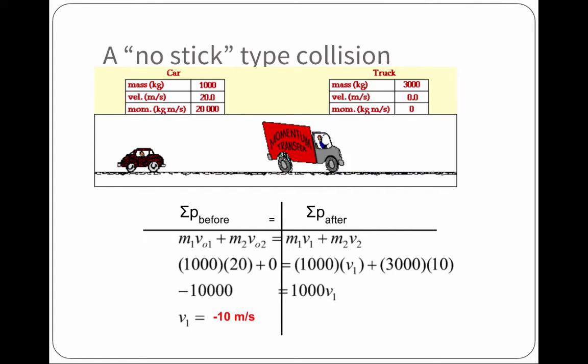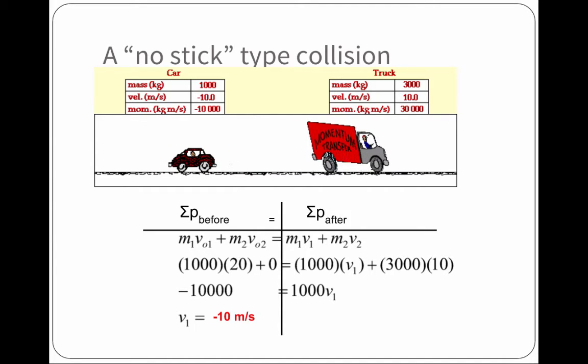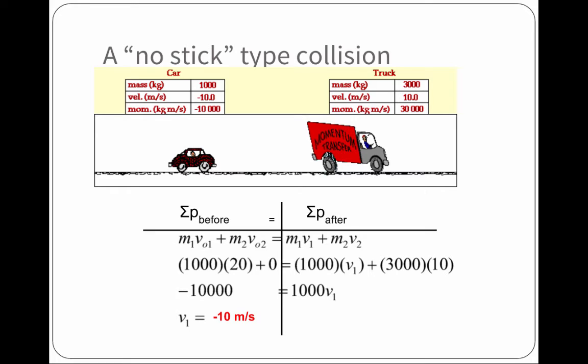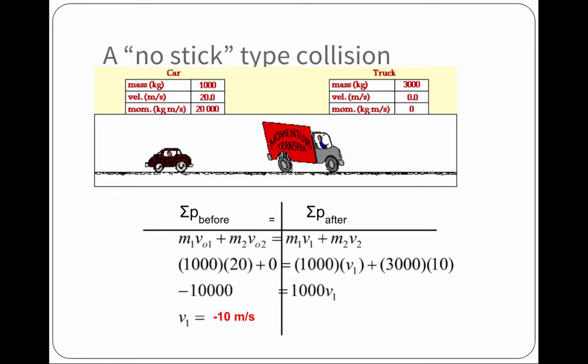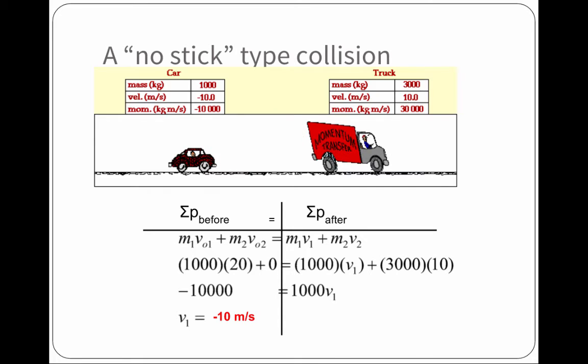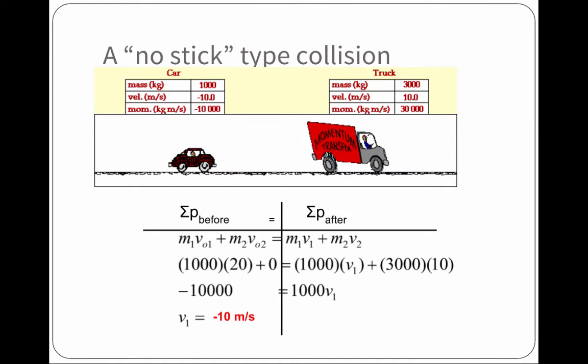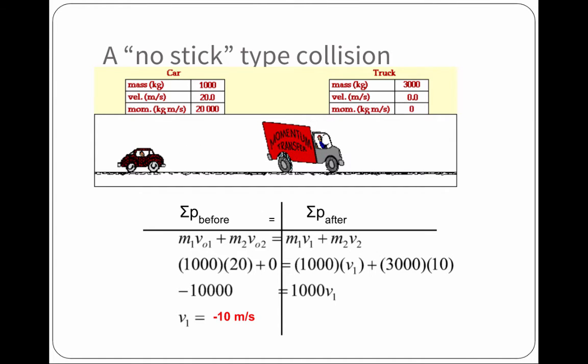...is equal to the mass times the velocity of the car, again, which is a thousand times the velocity of the truck, which is a thousand times the value we don't know, plus the mass of the truck times the velocity of the truck after the collision, three thousand times ten. Do the algebra there, do the math, and the velocity of the car after the collision is a negative ten meters per second. He bounces back after hitting the truck.